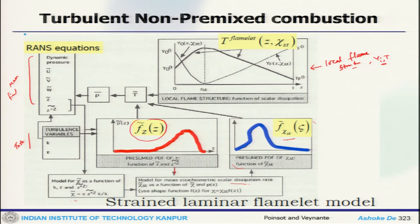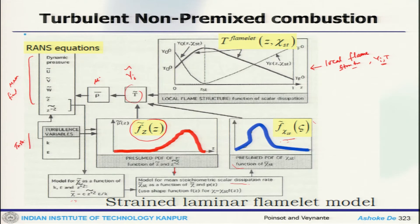Compared to the equilibrium calculation — where we only had a distribution function of Z and local flame structure — here we additionally compute Z and Z variance to calculate psi (scalar dissipation rate), then the stoichiometric scalar dissipation rate mean, and finally the distribution function. These two PDFs together with the local flame structure give the mean temperature profile and mean Yi. Finally, density and viscosity (if temperature dependent) are fed back to the mean flow field.